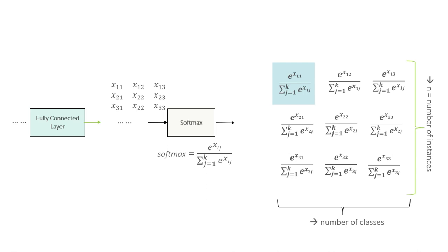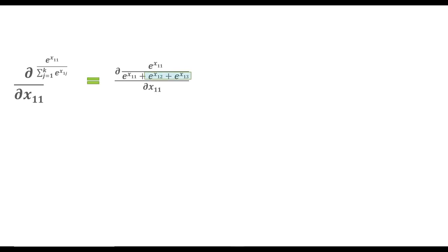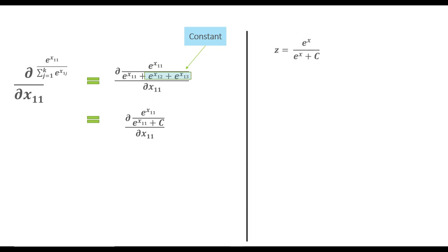Now if we focus our attention on one term and try to find out how we can actually backpropagate this final output — because this is going to be used to calculate the loss — we'll have to differentiate each one of these terms with respect to input parameters x11 and x12 and then backpropagate that gradient through the softmax layer. If we try to differentiate with respect to x11, because we are doing partial differentiation, the other terms will be constant — we can substitute them with capital C — giving us an equivalent function where variable z equals e raised to x divided by e raised to x plus C.